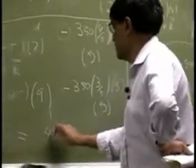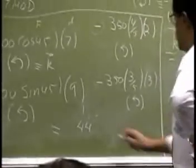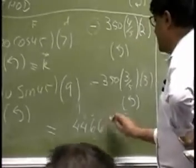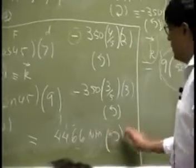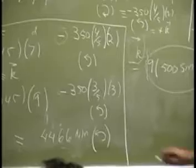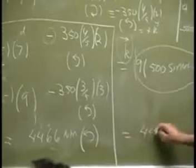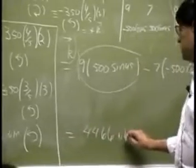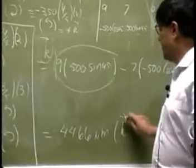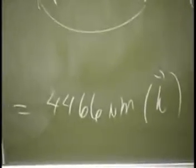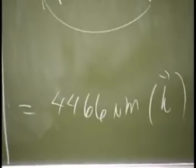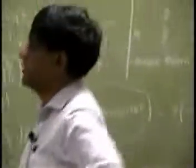So if you go through the actual calculation, you're going to get the exact same number as 4466 newton meter, and it's going to be in counterclockwise direction, which is the same thing as 4466 newton meter times k. And if you want to go that route, then that's going to be k.